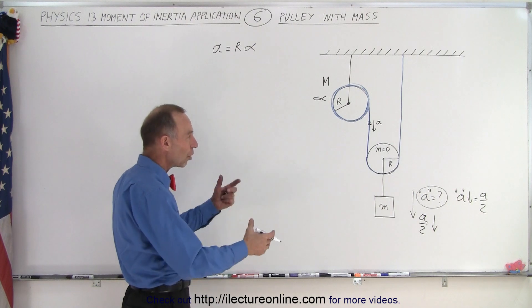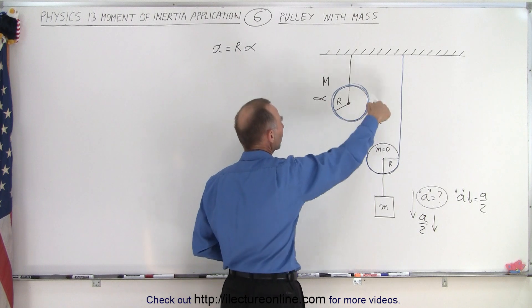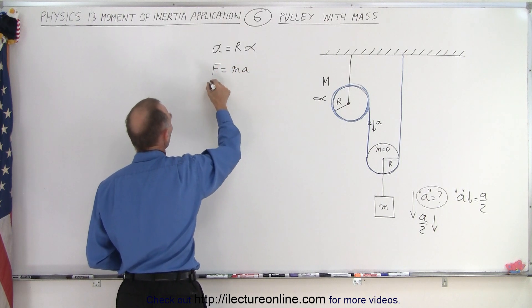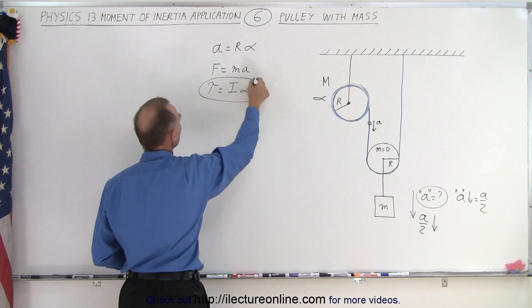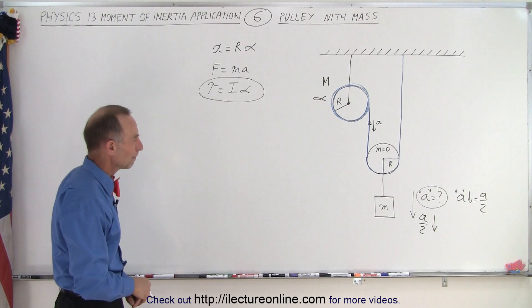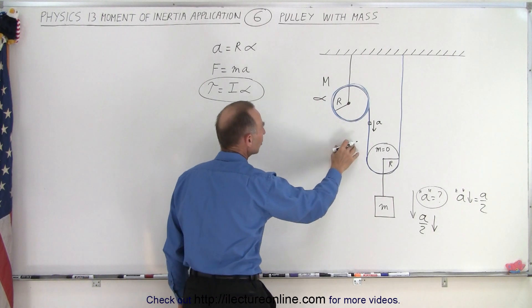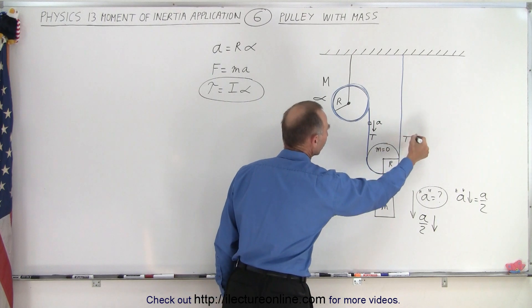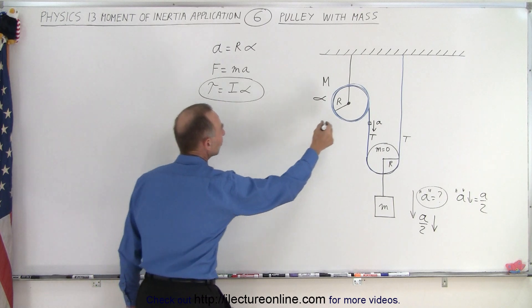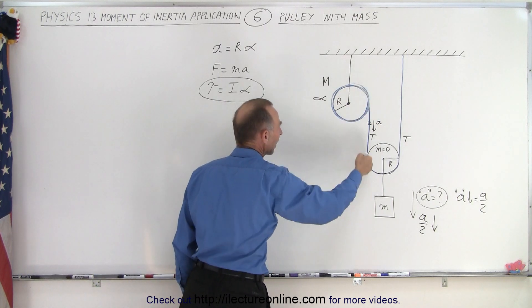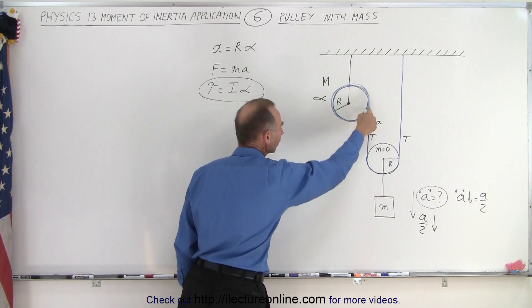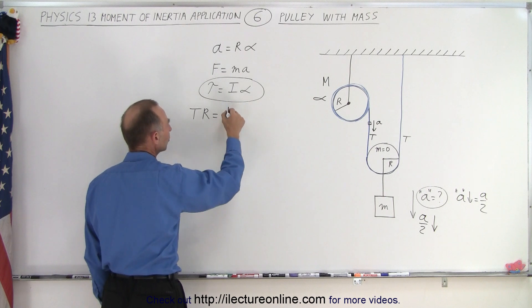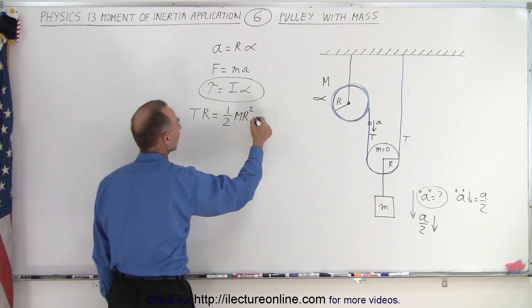To solve this whole problem we have to take into account what happens at the pulley. Instead of using the linear equation F = ma, we're going to use torque equals I times alpha, because we have moment of inertia on that pulley. The torque is provided by the tension in the string — let's call that T. Since there's no mass in the string, the tension is the same throughout. So the torque is T times r, which equals the moment of inertia of the disk — one half times the mass times r squared — times alpha.